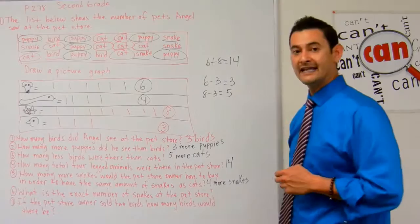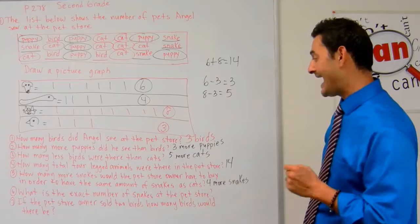Number six reads: what is the exact number of snakes at the pet store? The exact amount is four.